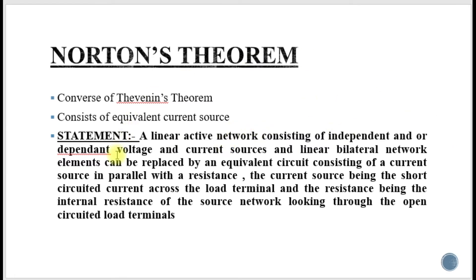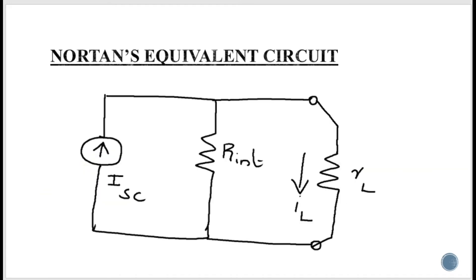Norton's theorem mainly deals with a linear active network consisting of independent or dependent voltage and current sources. That linear bilateral network can be replaced by an equivalent circuit consisting of a current source in parallel with a resistance. This is the Norton's equivalent circuit — a current source in parallel with the equivalent resistance named R internal.